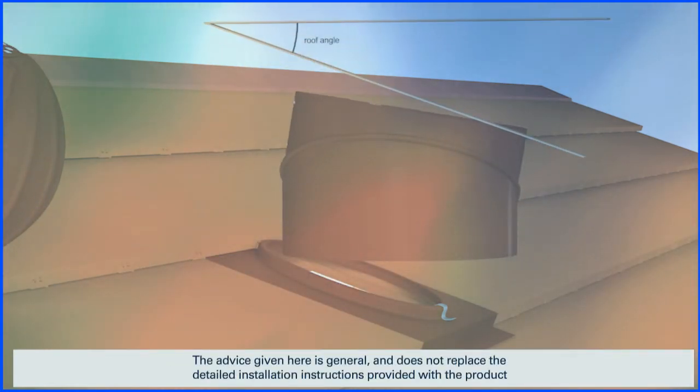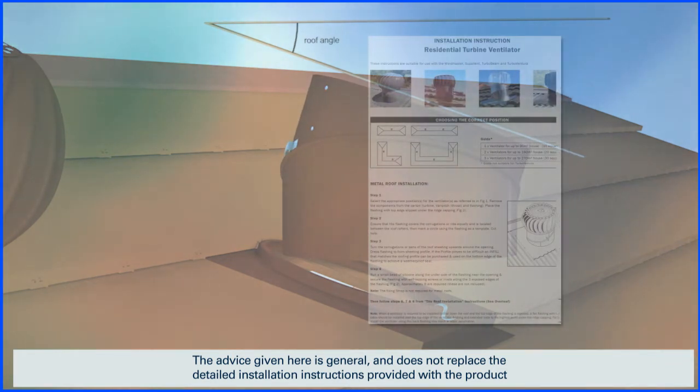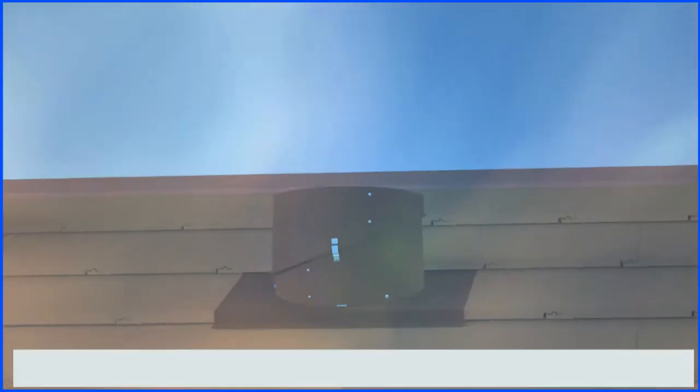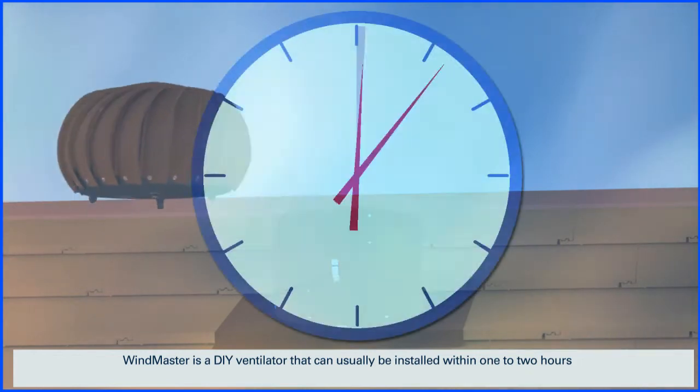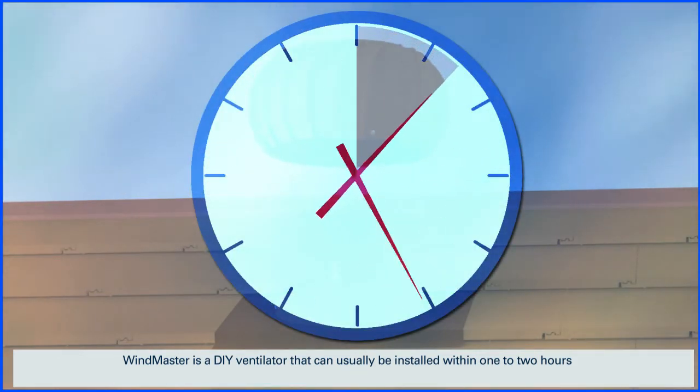The advice given here is general and doesn't replace the detailed installation instructions provided with the product. WindMaster is a DIY ventilator that can usually be installed within one to two hours.